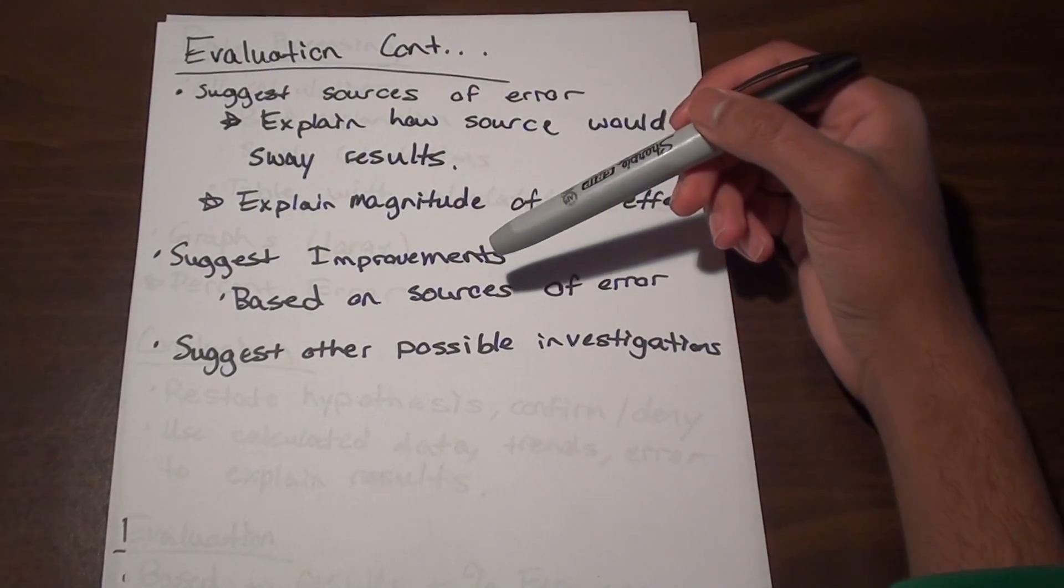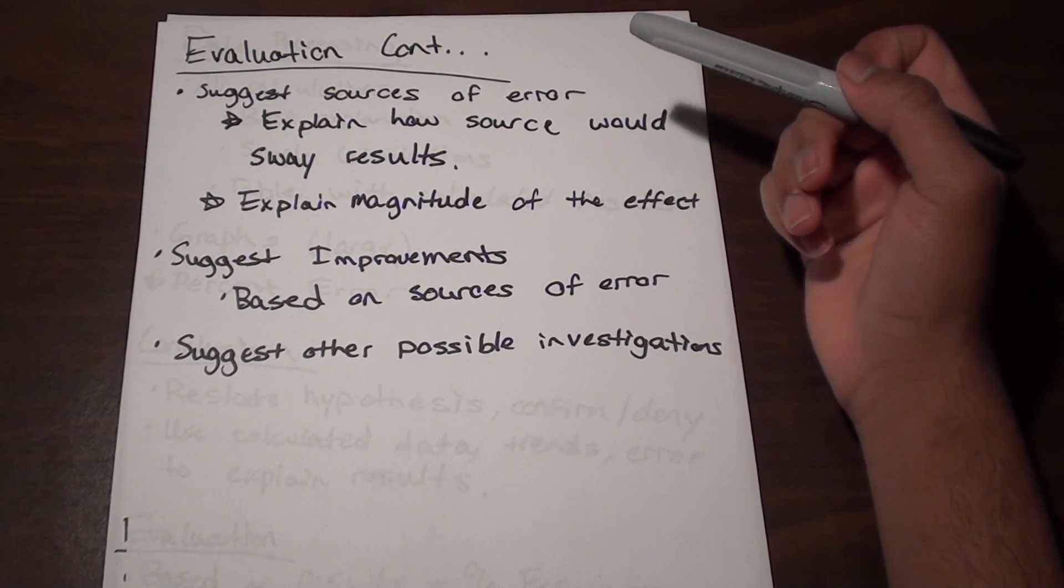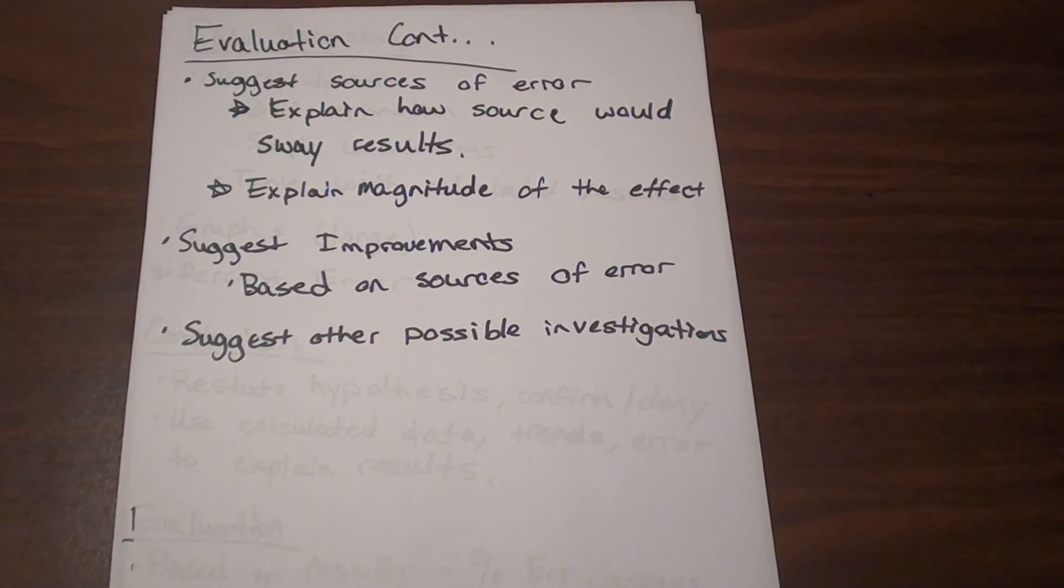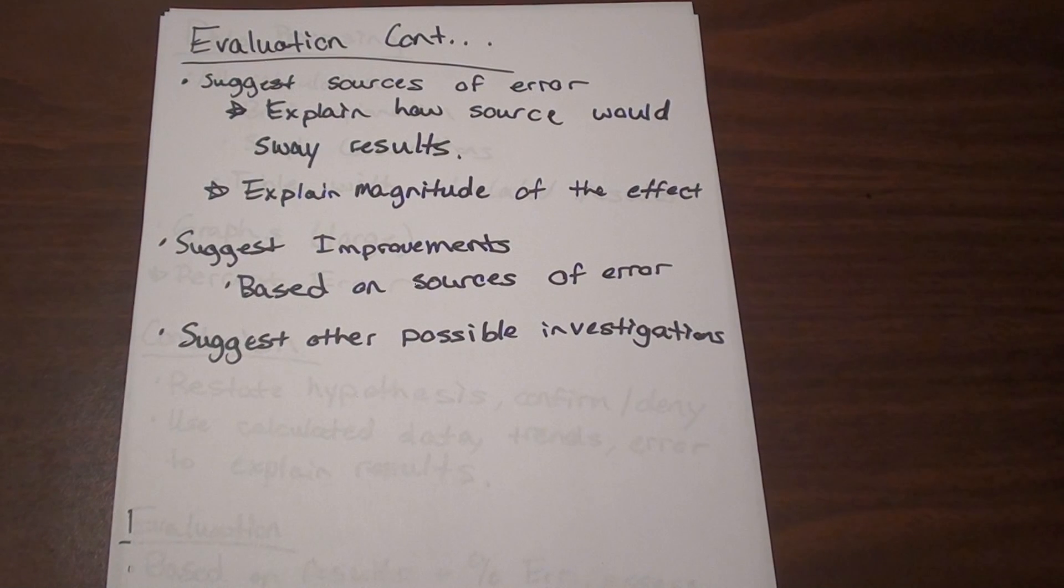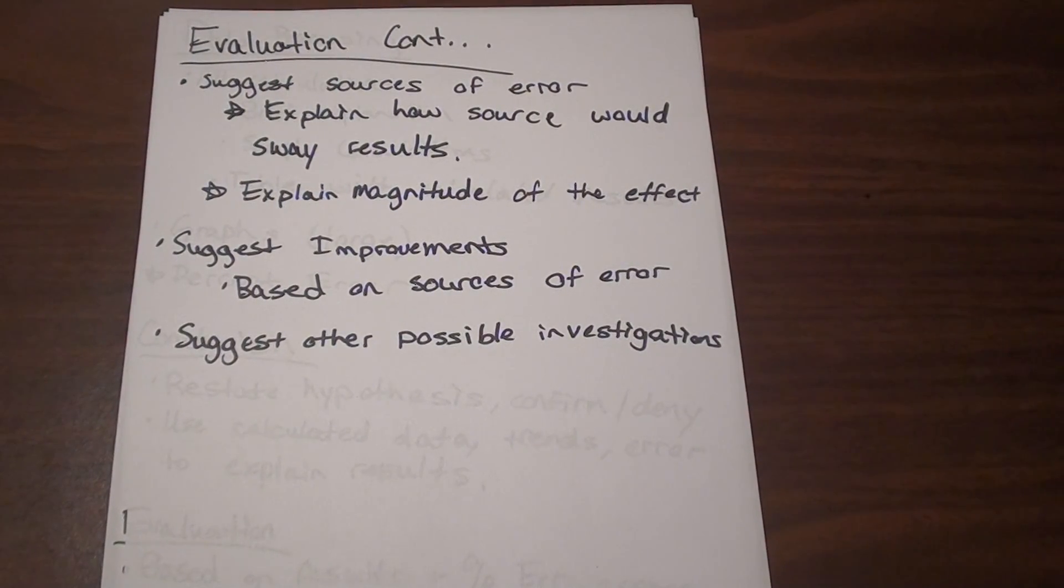Then you're going to want to suggest improvements directly based on the source of error. And these are improvements that you can carry out in the lab, obviously. And then at the end, I just like to suggest kind of another possible investigation that could be carried out. Like one of my labs was testing the temperature of solutions on the voltage of galvanic cells, so my other possible investigation was just the effect of temperature on the power and the life of batteries. Really here, you're just kind of using your—you just want to be creative and be smart at the same time.